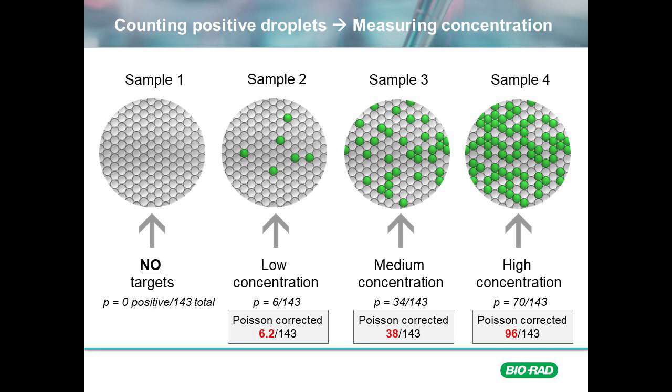As concentration increases, so does co-occupancy, and these must be corrected using Poisson's equation. Now, of course, remember that 143 droplets is not a realistic number of droplets to use. As with any statistical analysis, the more events that are analyzed, the more precise and accurate the results will be. We normally use at least 10,000 droplets to get good statistical representation of the true value in our sample.